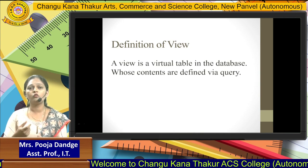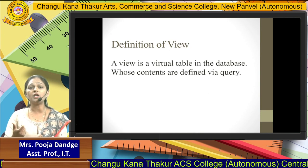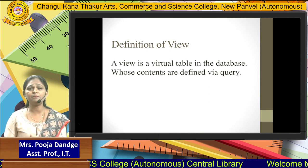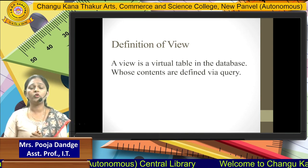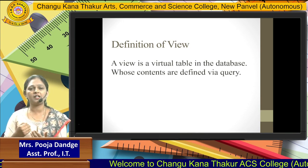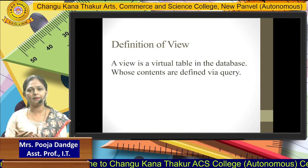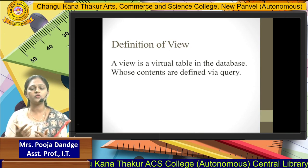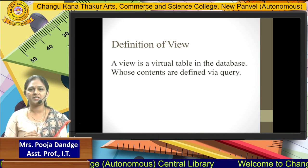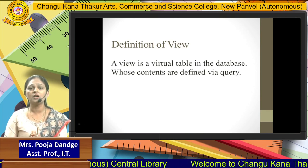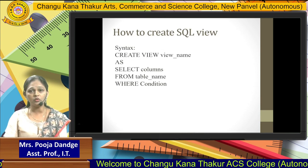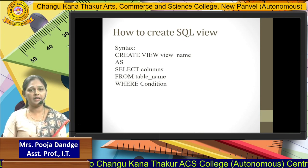With the help of that view object, we can access the data from our original table. Suppose we have to perform some trial-based queries on our database — we cannot directly apply those trial queries on the original table. In that case, we create a view, apply the trial queries on the view, and once successfully executed, apply the same queries on the original table. This keeps our database secure with the help of the view concept.